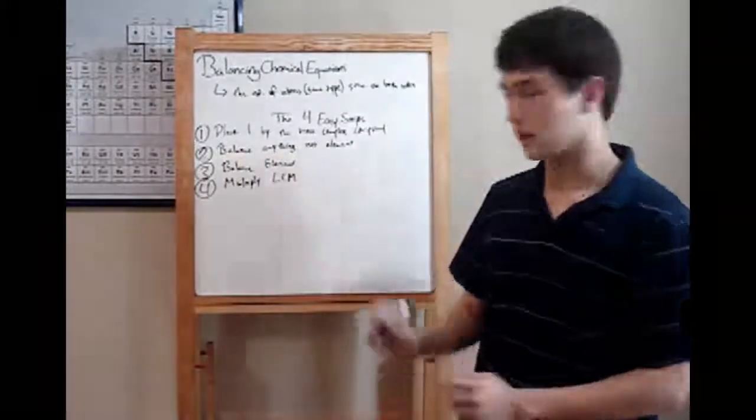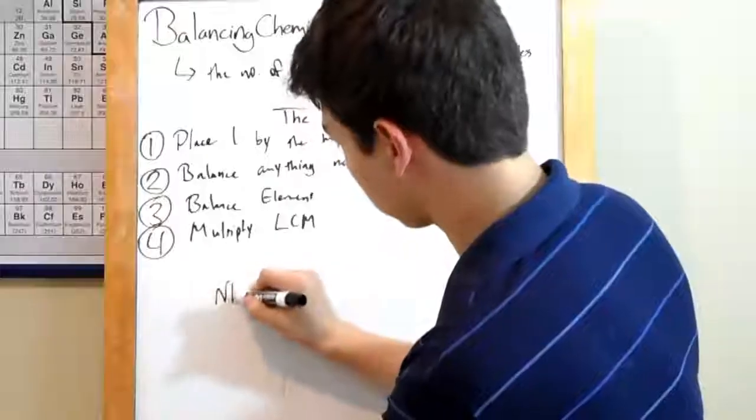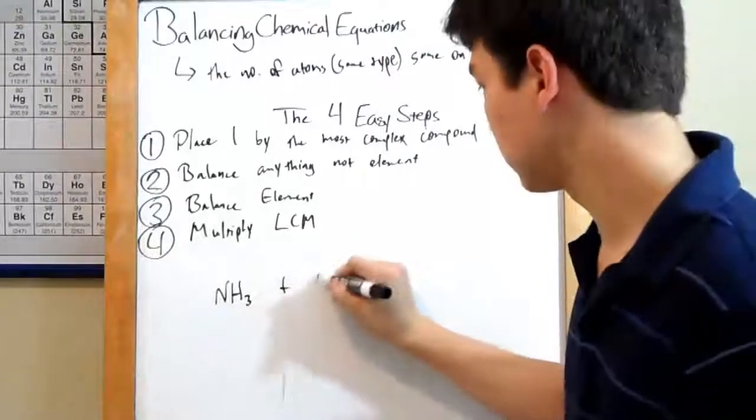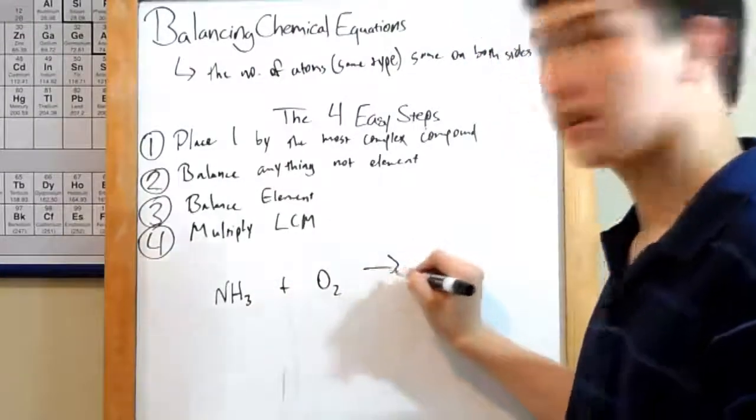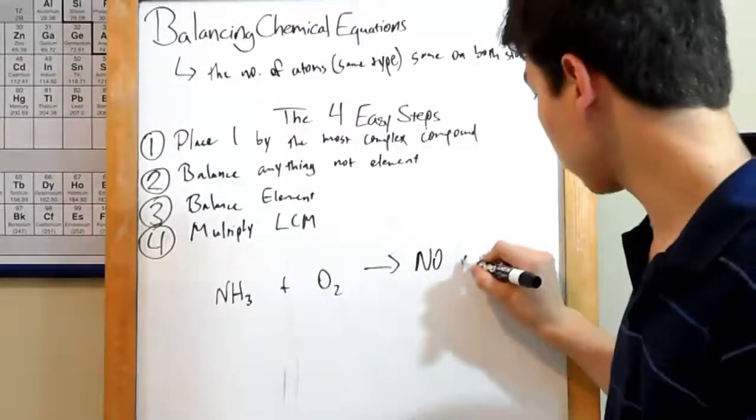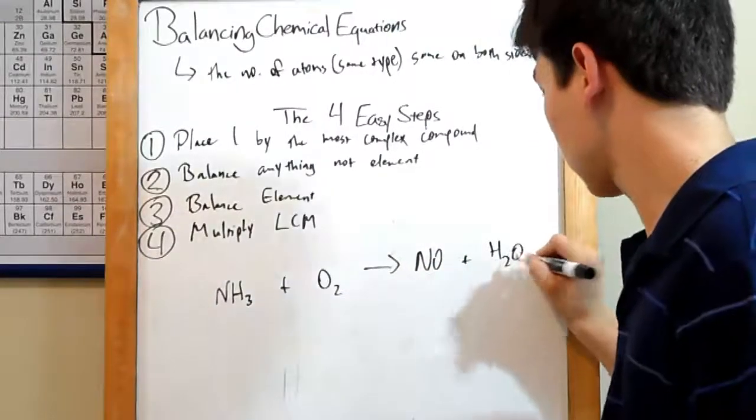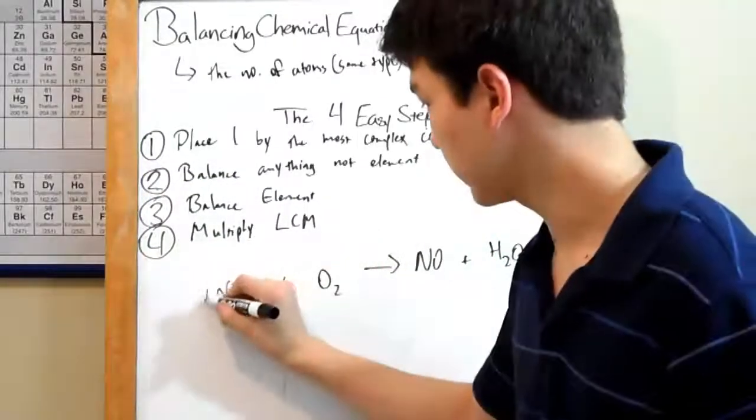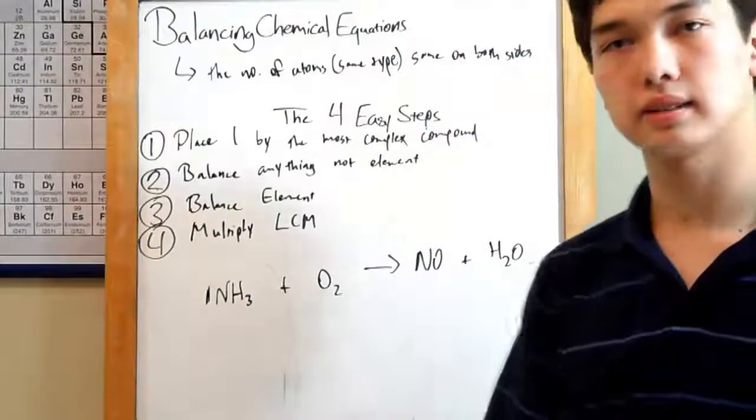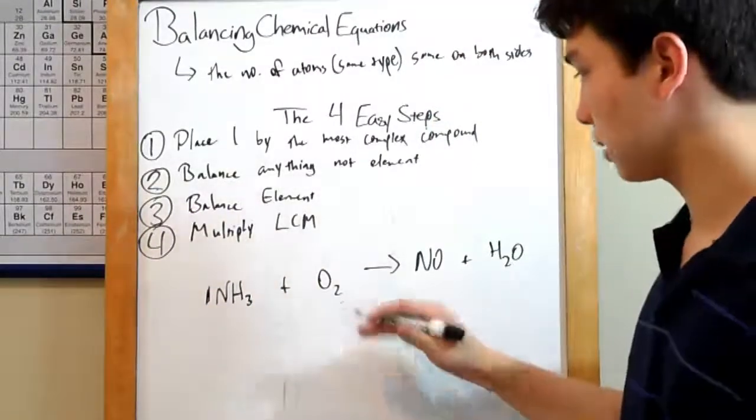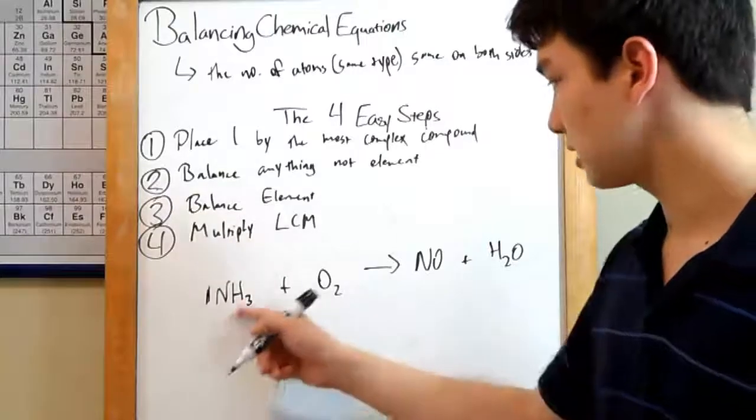Let's say you've got NH3. And it's going to combine with some oxygen. I like oxygen. And what it'll make is some NO and some water. One by the most complex compound, NH3. Now, we balance the things that are elements. O2 is, again, an element. So, we don't worry about that for now. We can balance either nitrogen or hydrogen.